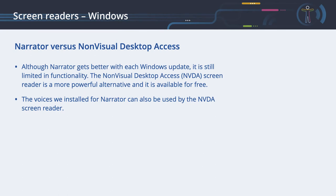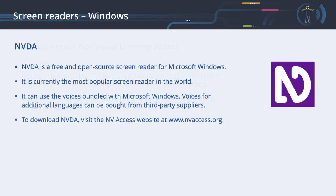Narrator vs. Non-Visual Desktop Access. Although Narrator gets better with each Windows update, it is still limited in functionality. The Non-Visual Desktop Access NVDA screen reader is a more powerful alternative and it is available for free. Please note that the voices we install for Narrator can also be used by the NVDA screen reader. NVDA is a free and open-source screen reader for Microsoft Windows - it is currently the most popular screen reader in the world. It can use the voices bundled with Microsoft Windows.